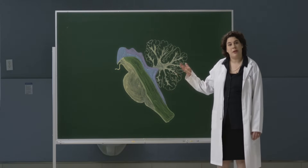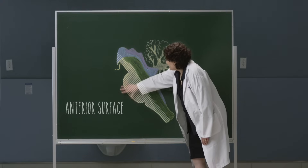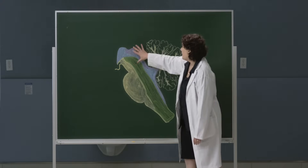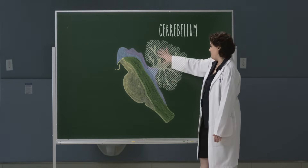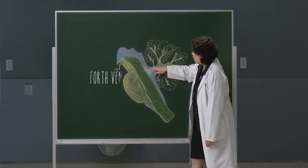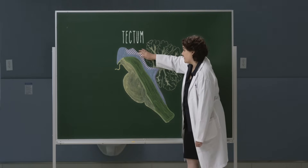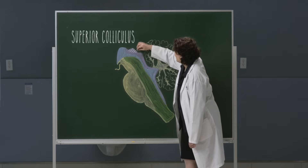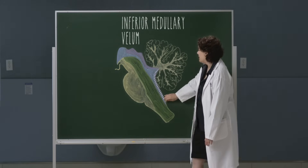This is a diagram of the brainstem that will help us conceptualize the inner structures and their relationships to each other. The anterior surface is here and this is posterior. Here is the midbrain, just caudal to the diencephalon; here is the pons, the medulla, and the cerebellum. The ventricular system comprises the cerebral aqueduct at the level of the midbrain, which opens up into the fourth ventricle and then closes off into the central canal. The area posterior to the ventricular system is the tectum, comprising the superior and inferior colliculi as well as the superior and inferior medullary vela, which close off the fourth ventricle.